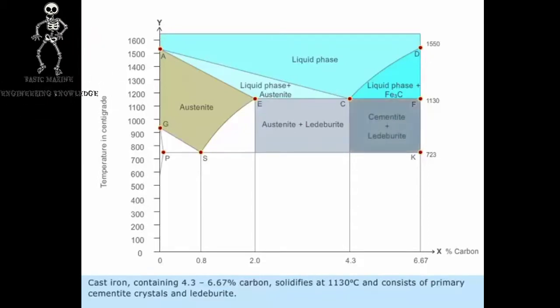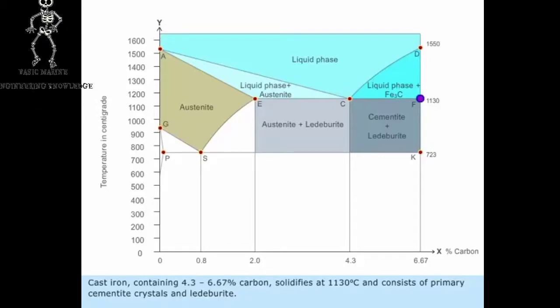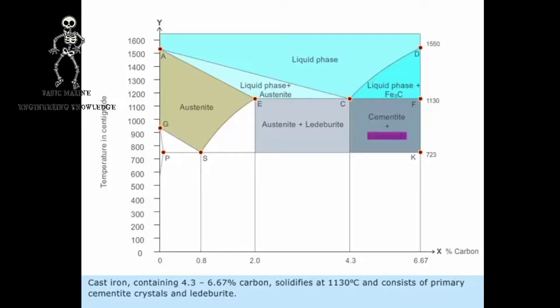Cast iron containing 4.3 to 6.67 percentage carbon solidifies at 1130 degrees centigrade and consists of primary cementite crystals and ledeburite.